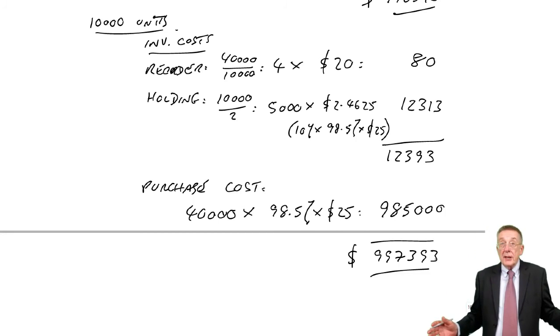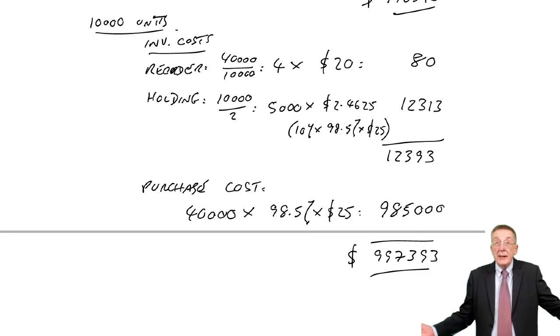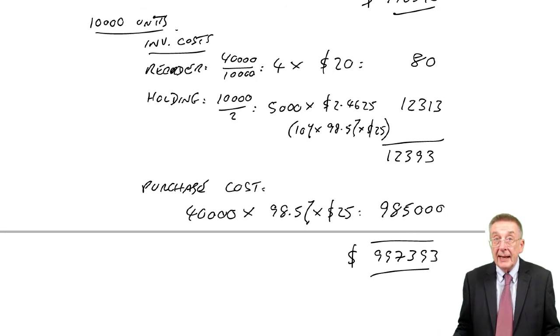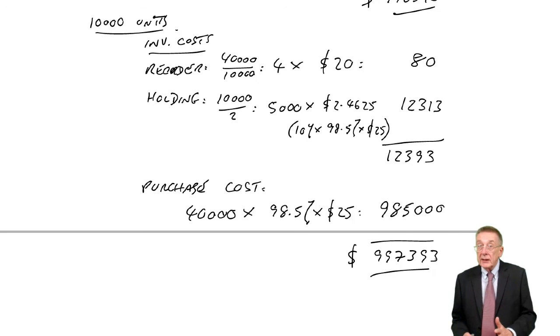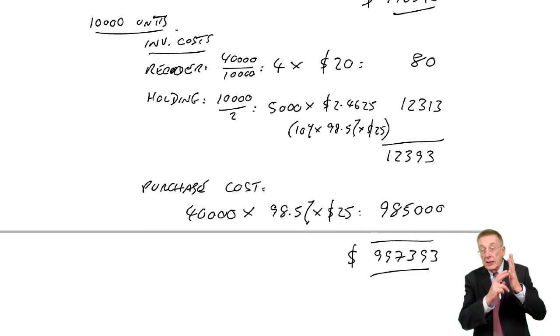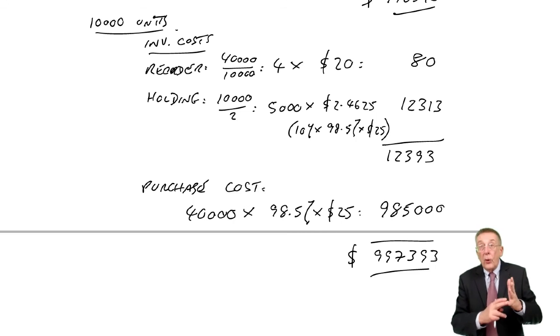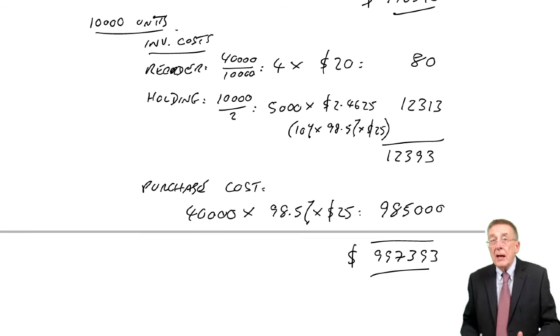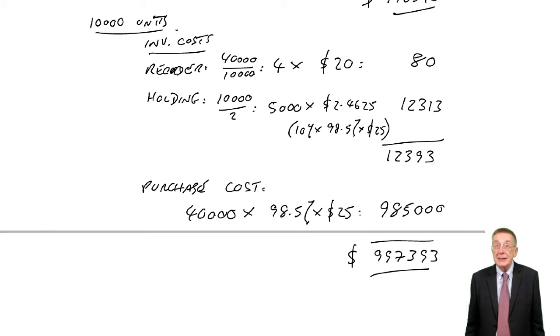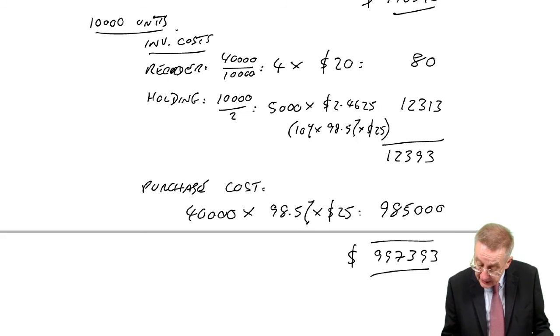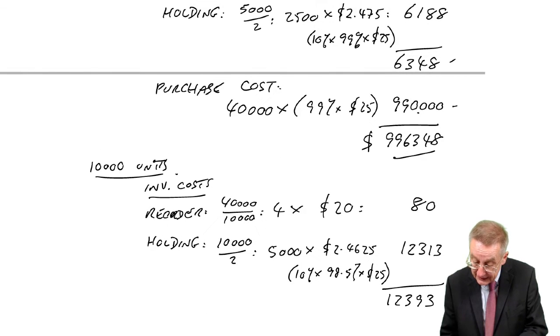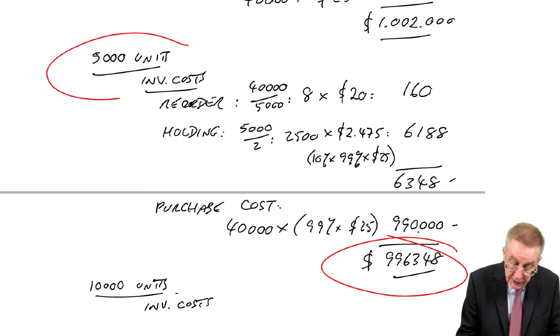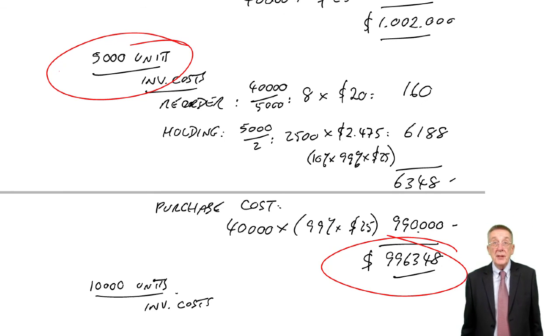No other levels worth considering. If we order 20,000 each time, there's no extra saving on the purchase cost and inventory costs are bound to be higher. The best one can only be either the EOQ or the levels at which we first get a discount. So here, 5,000 and 10,000. One of those three has to be the cheapest. Here, $996,000 is the cheapest, and we would therefore order 5,000 units each time.